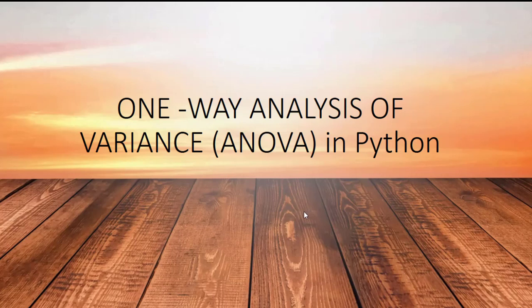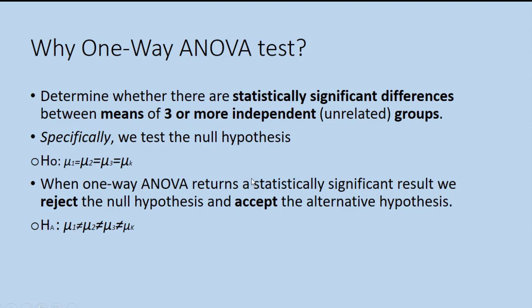Hello guys, welcome to today's session of tutorials on one-way analysis of variance, which is ANOVA in Python. We use the one-way ANOVA test to determine whether there is any statistically significant difference between the means of three or more independent groups. When comparing just two groups, you would use the t-test.